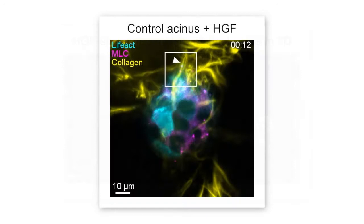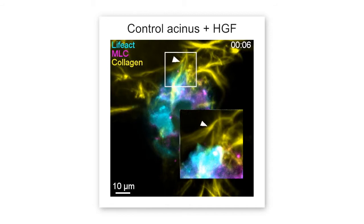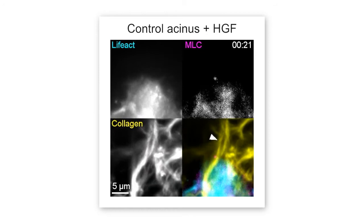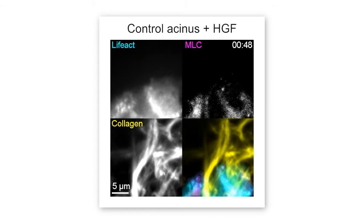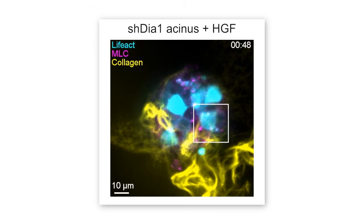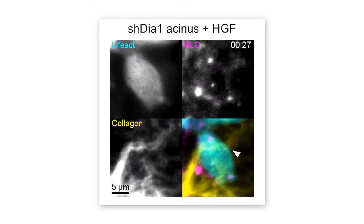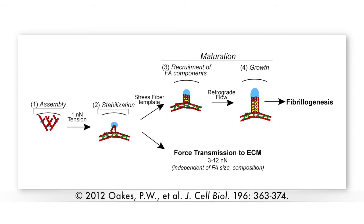In control asini, cell protrusions could form large, stable focal adhesions that were enriched with myosin. These adhesions could transmit large traction forces and deform individual collagen fibrils, allowing the cells to move out of the asini as they initiated branching morphogenesis. In contrast, cells lacking DA1 only formed small, unstable adhesions that generated lower traction forces and failed to displace surrounding collagen fibrils.